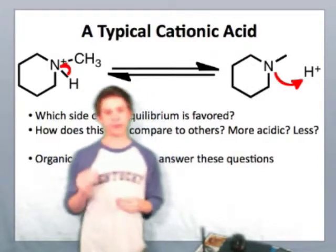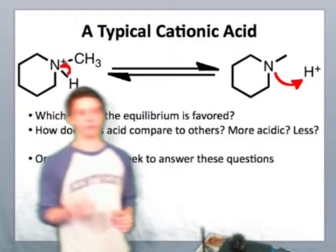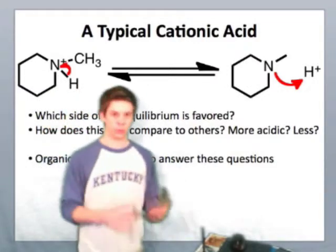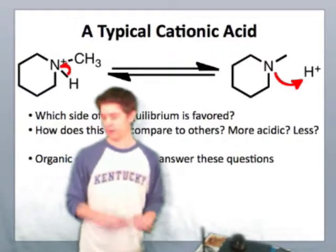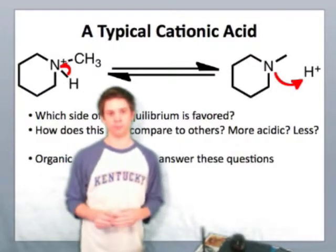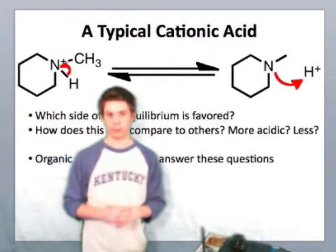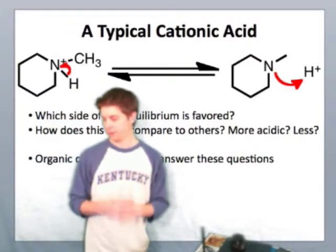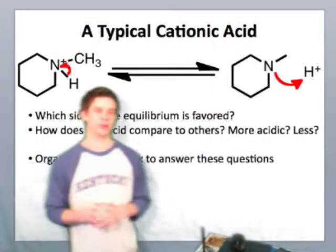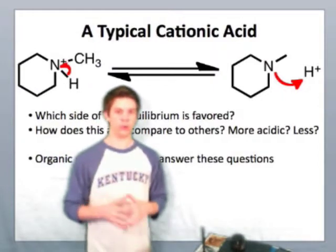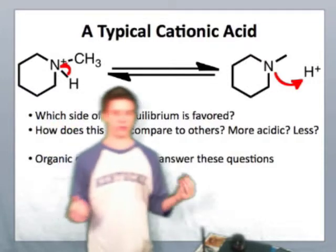We'd like to know these things because we'd like to know the relative reactivity of this compound with respect to others that we might use in combination with it. For instance, if we were to mix this positively charged ammonium group with a positively charged oxygen or a neutral oxygen, where would the proton end up — predominantly on the oxygen or on the nitrogen?